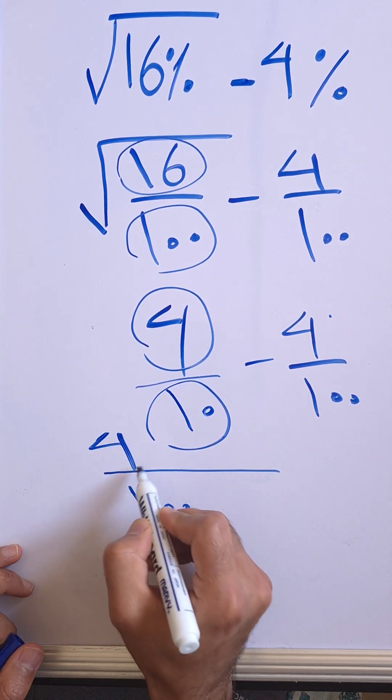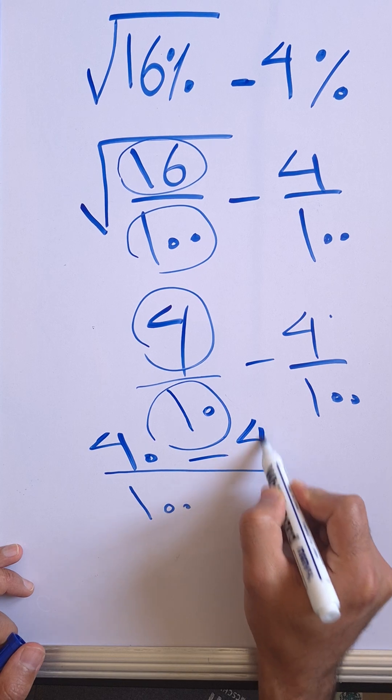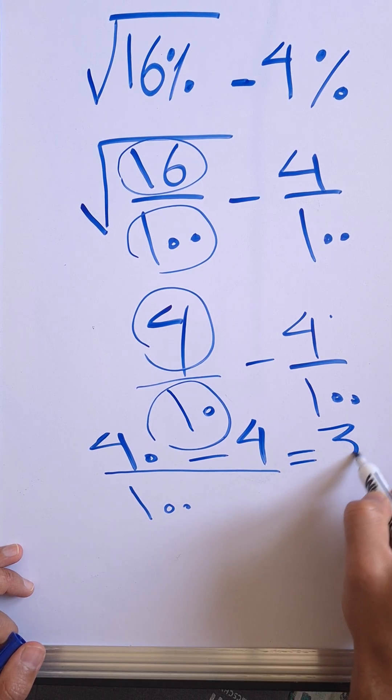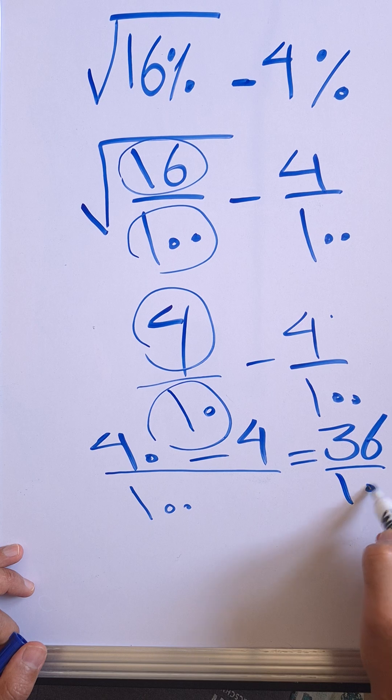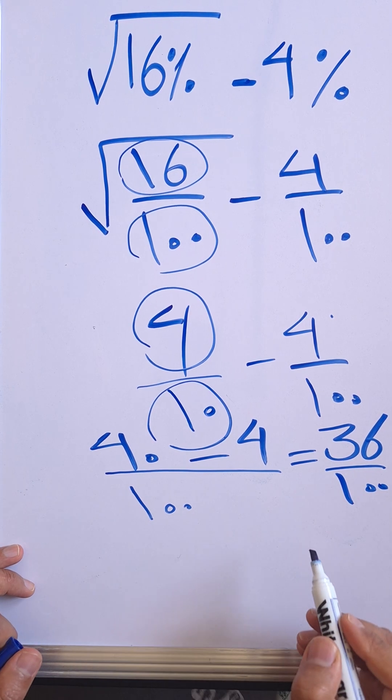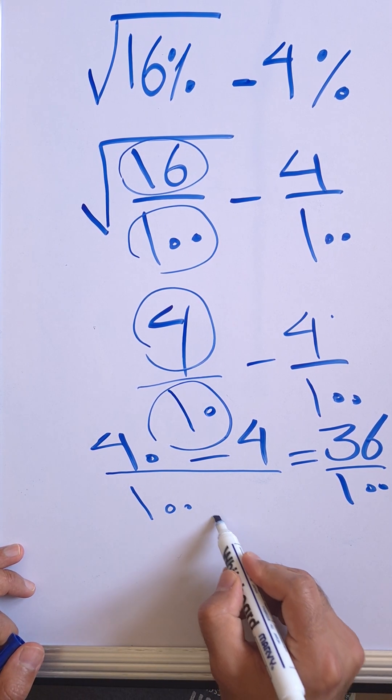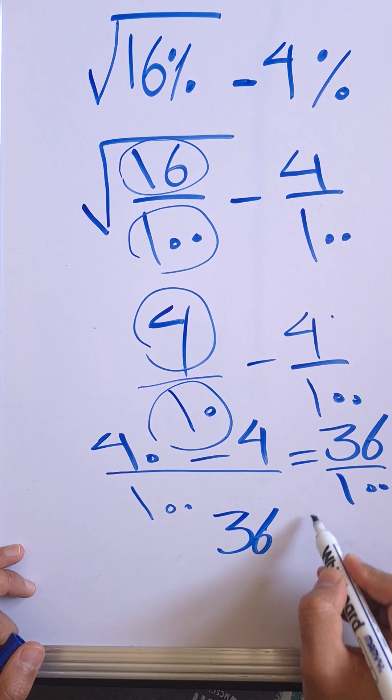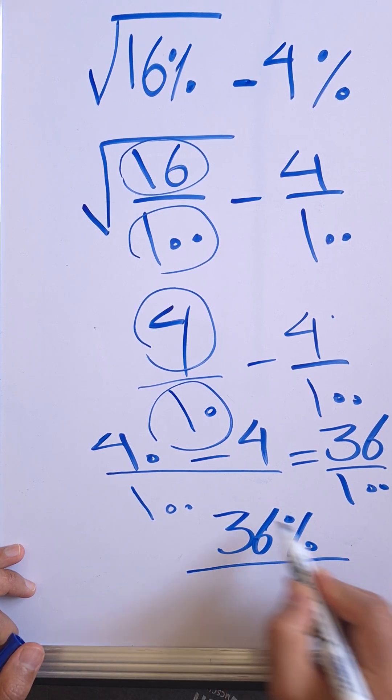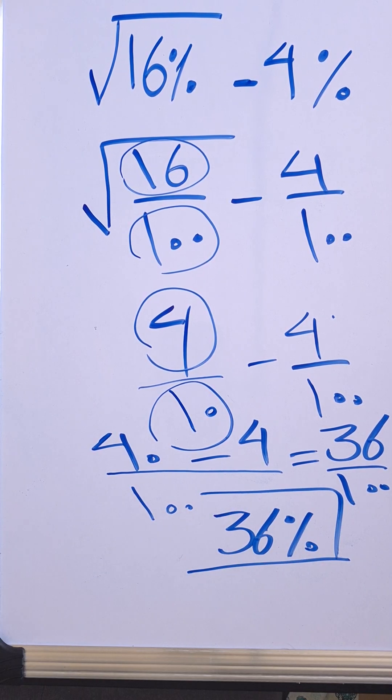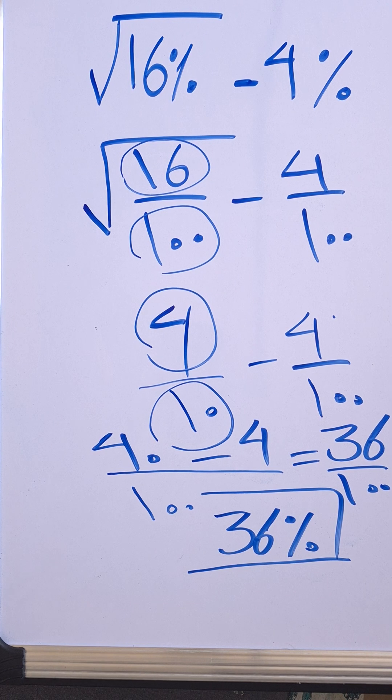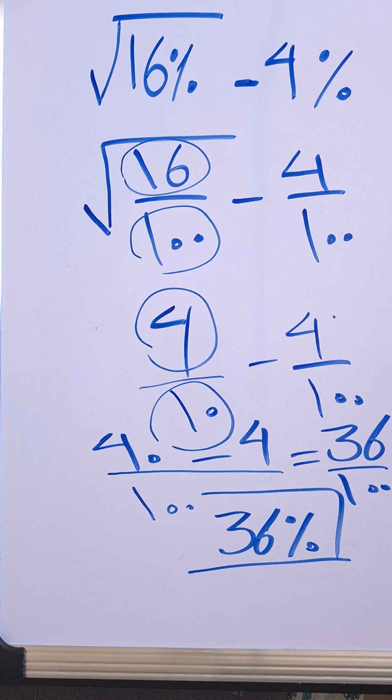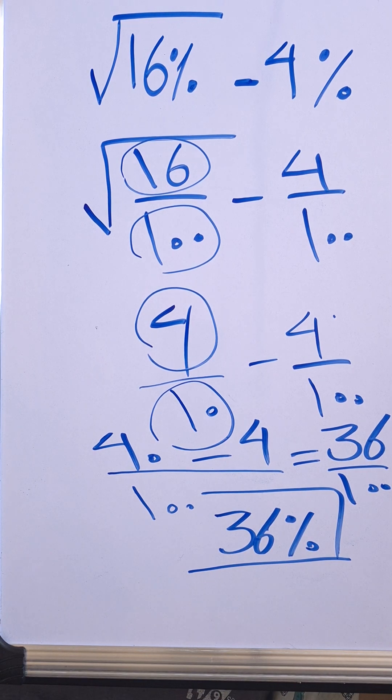So 40 minus 4 equals 36 over 100, or in terms of percentage that's 36 percent. Let's put a box around it and that's the final answer. So if you want to see more SAT hacks like this, please like the video and subscribe to the channel.